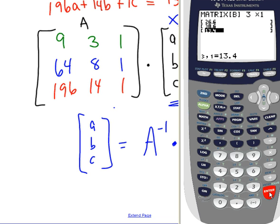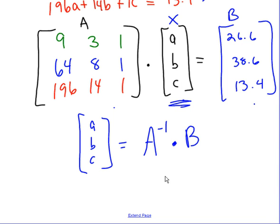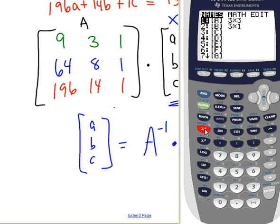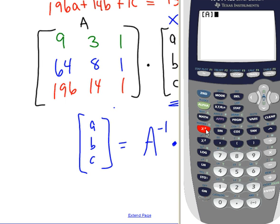And then I recommend you just hit second quit, so you're out of it, and now we're going to type A inverse B into my calculator. So to do that, I grab them back. Second matrix A, hit the little inverse key. Second matrix, grab matrix B here, hit enter, and that's what your answers give you.